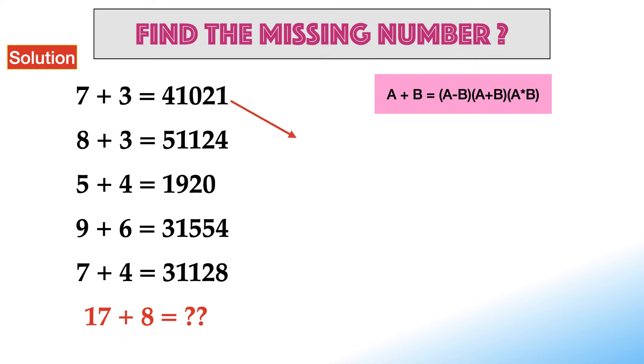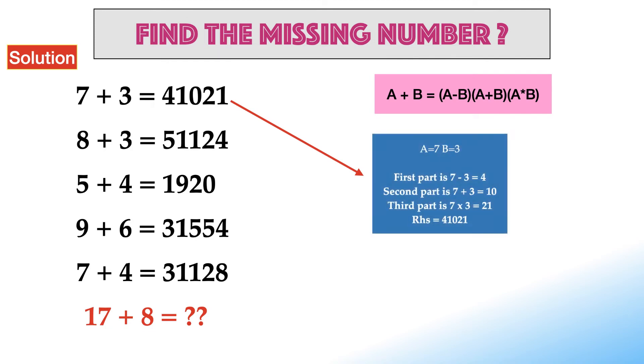In the first equation, A is equal to 7 and B equals 3. According to the logic, first part is 7 minus 3 which is equal to 4. Second part is 7 plus 3 which is equal to 10. Third part is 7 times 3 which is equal to 21. And hence, RHS is 41021 which is validated.